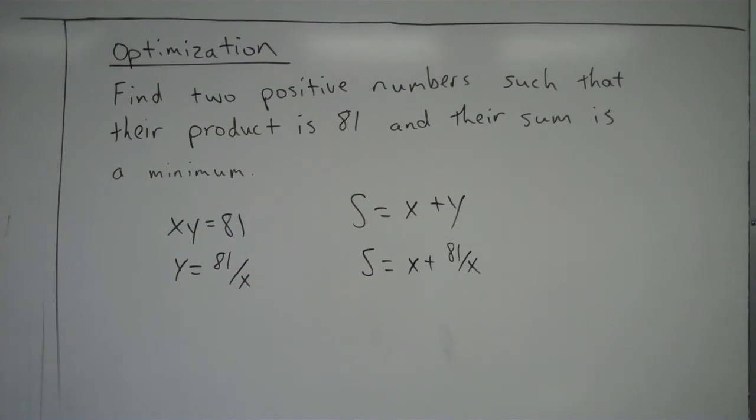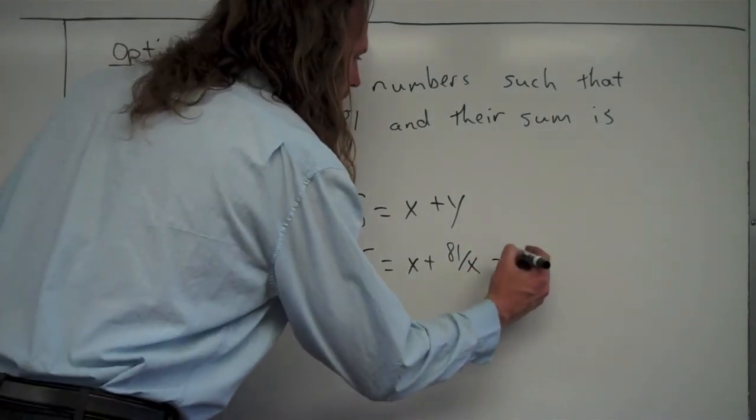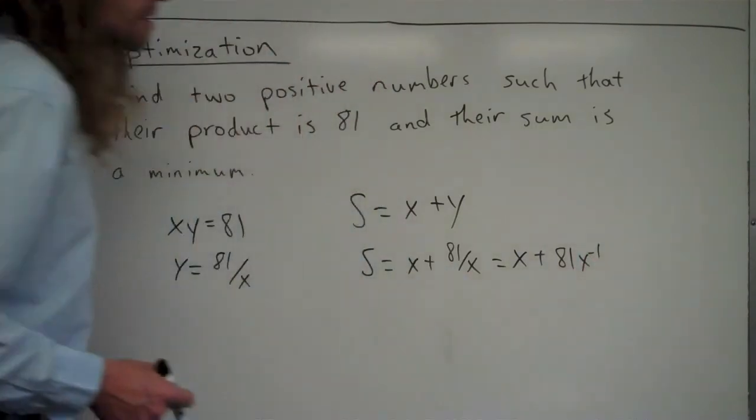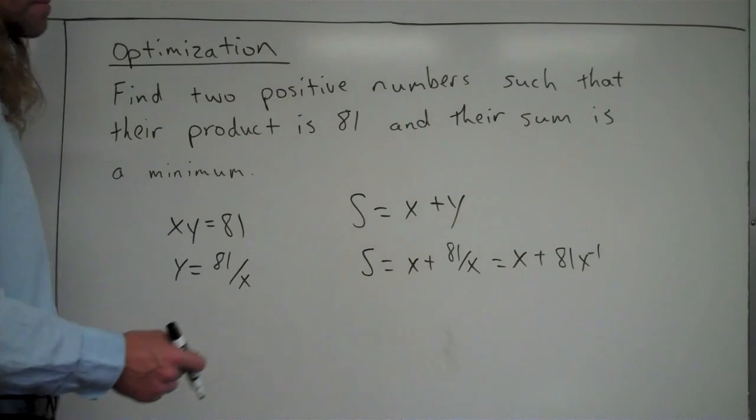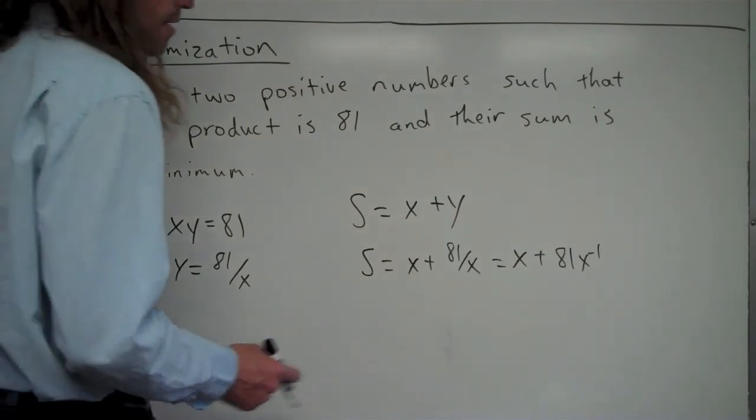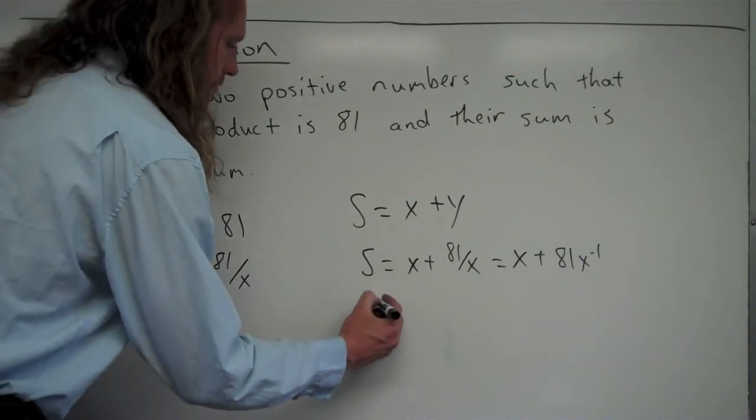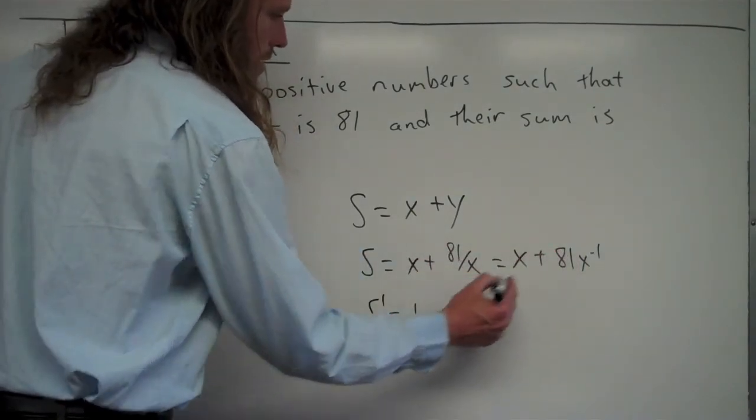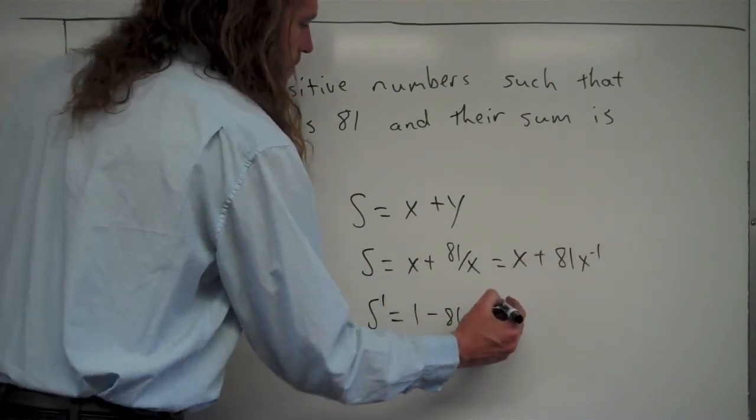And so now I'm going to go ahead and I want to take the derivative of this. Before I do so, I'm going to rewrite S one more time as x plus 81 times x to the negative 1. It's the same thing, but it's just bringing this x up and writing the negative exponent. And let's see here. Now I'm ready to take the derivative. So S prime is going to equal, the derivative is going to be 1, and then bring the negative one down, minus 81x to the negative 2.